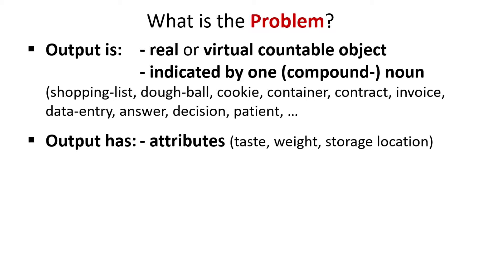If you complete the sentence 'the output is,' then you define the object itself — for example, cookie is a foodstuff. If you complete the sentence 'the output has,' then you describe its attributes — for example, cookie has a taste, weight, calories and storage location.